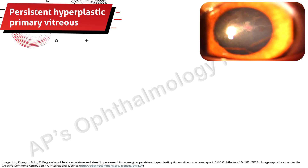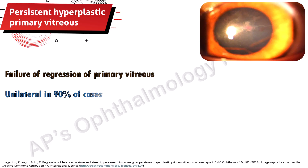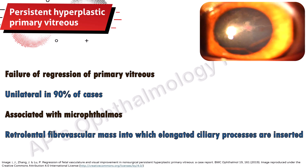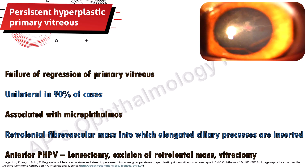Persistent hypoplastic primary vitreous (PHPV) is a developmental disorder in which there is failure of regression of primary vitreous. It is unilateral in most cases and occurs in microphthalmic eyes. A retrolenticular fibrovascular mass is seen, into which elongated ciliary processes are inserted. Treatment of anterior PHPV is by lensectomy and excision of the retrolental mass, followed by vitrectomy.